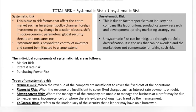Unsystematic risk — suppose you have a portfolio built from different companies' securities. Through careful selection and replacement of securities, you can reduce your risk. So this risk is called unsystematic risk. Investors can avoid this risk, which is why the market does not compensate for it. If investors make decision-making wise choices, this risk can be avoided. Unsystematic risk can be mitigated through portfolio diversification — this is why it is also called diversifiable risk, and the market does not compensate for taking such risk.